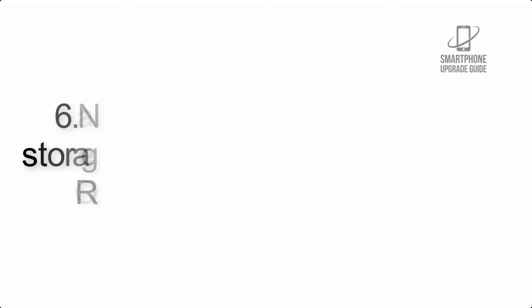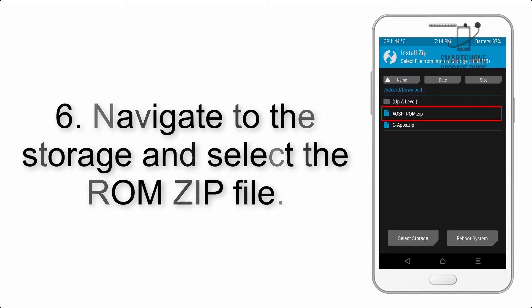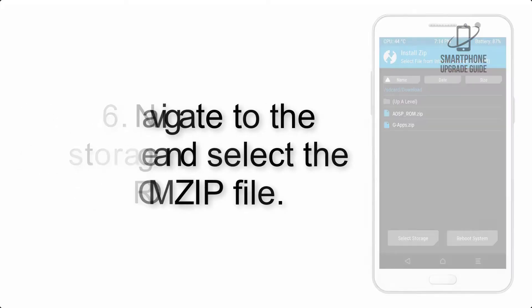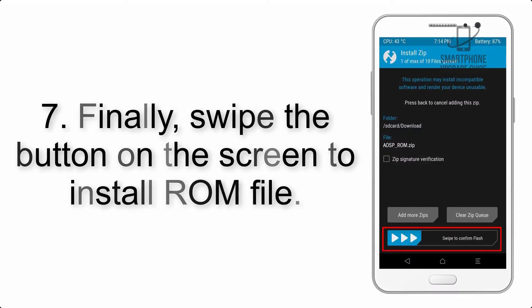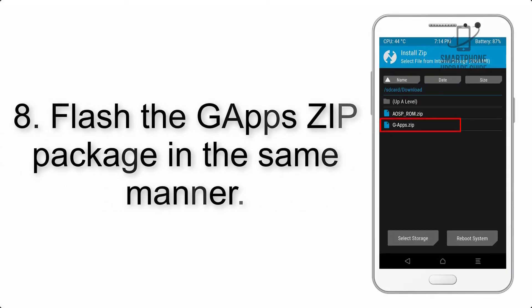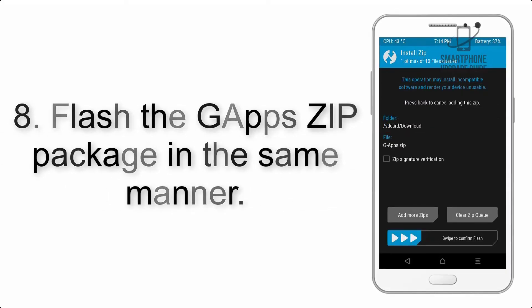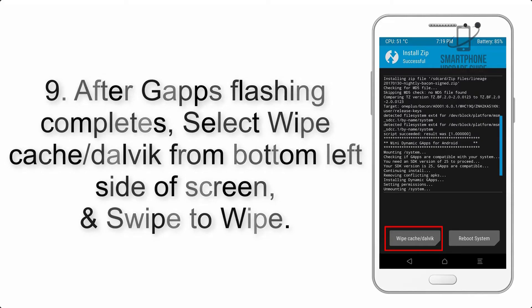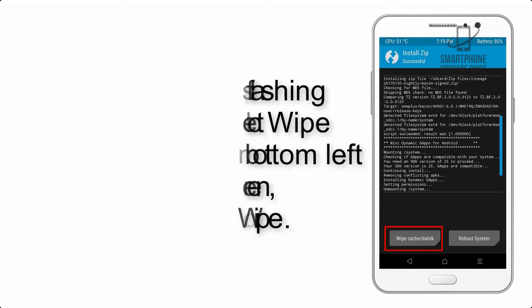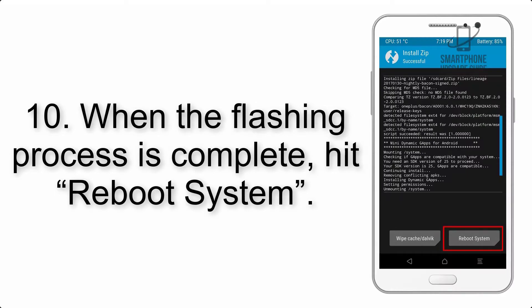Step 6: Navigate to the storage and select the ROM zip file. Step 7: Swipe the button on the screen to install the ROM file. Step 8: Flash the GApps zip package in the same manner. Step 9: After GApps flashing completes, select Wipe Cache and Dalvik from the bottom left side of the screen and swipe to wipe.